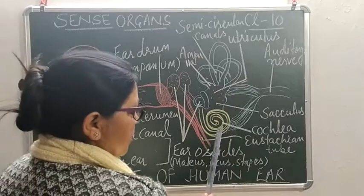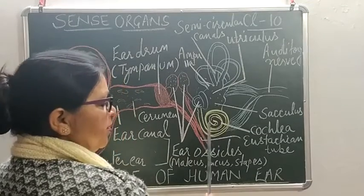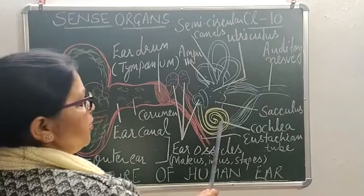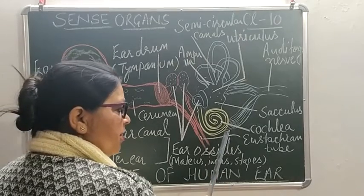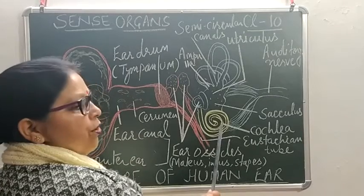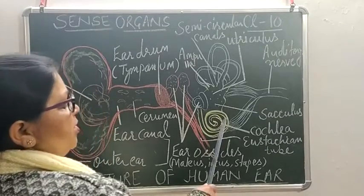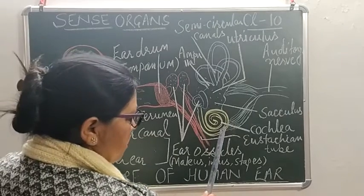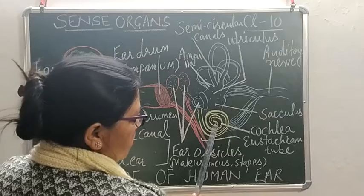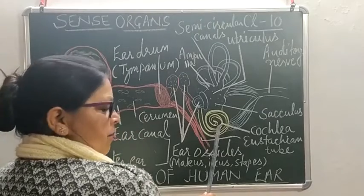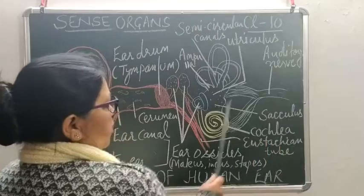Coming back to the cochlea — the middle part of the cochlea contains endolymph fluid and also contains sensory cells for hearing. These sensory cells are called the organ of Corti. These sensory cells, which are sensitive to hearing, send the impulse or message to the brain through the auditory nerve. So the auditory nerve carries the hearing impulse from the organ of Corti to the brain.